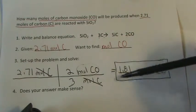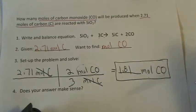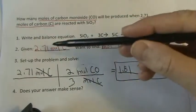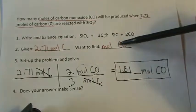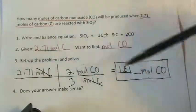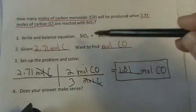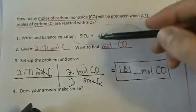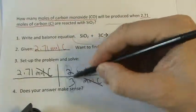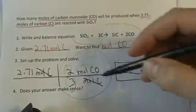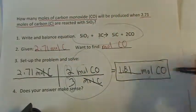The key here, again: identify what you're given, what you want, put what you're given here, what you want here. And then use the balanced chemical equation to find your coefficients or to find your mole ratio, and end up with the desired units.